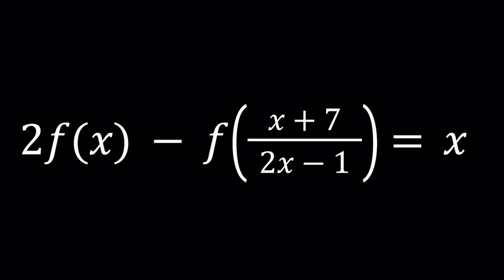Hello, everyone. In this video, we're going to be solving a homemade functional equation. I'll tell you a little bit about the process, how I came up with this problem. But we have 2 times f of x minus f of x plus 7 divided by the quantity 2x minus 1, and it's equal to x.